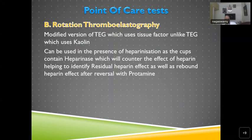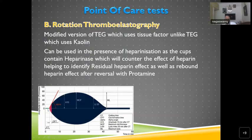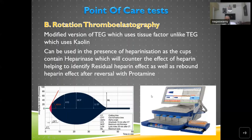ROTEM is a modified version — introduced after TEG. Unlike TEG, ROTEM uses cups containing heparinase, so it can be used in the presence of heparinization, helping to identify residual heparin effect and rebound heparin effect after removal. The graph is similar but terminology differs: clotting time (CT), clot formation time (CFT), alpha angle, and maximum clot firmness (MCF).